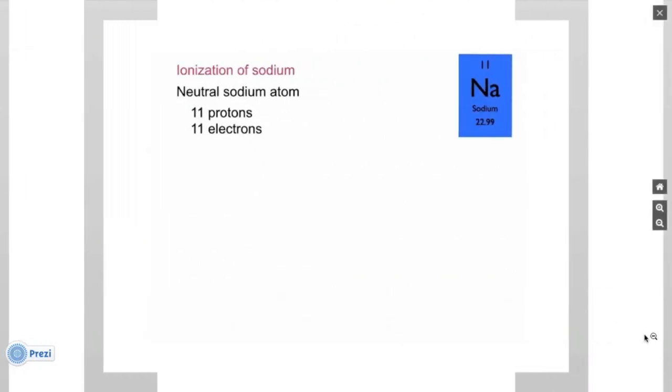If you look on our periodic table, we see that sodium has an atomic number of 11. Therefore, a neutral sodium atom has 11 protons and 11 electrons. Now, the protons are positively charged and the electrons are negatively charged. Each positive charge cancels out a negative charge, like so, leaving the neutral sodium atom with an overall charge of 0.